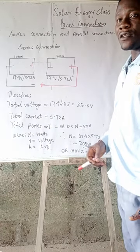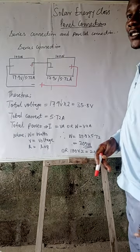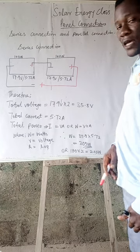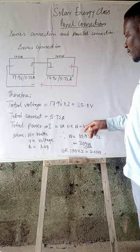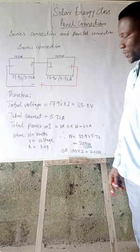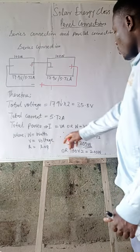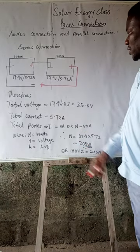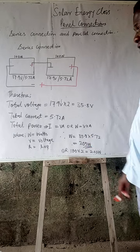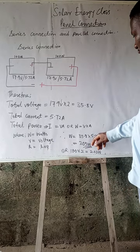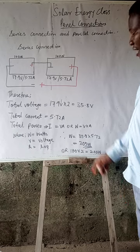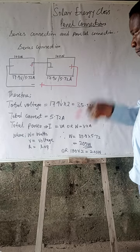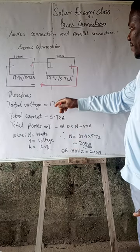The total power here is calculated using Ohm's law. In simpler terms, you use the formula: W equals V times A, where V is the voltage and A is the amperage. When you multiply the voltage by the current to get the power or wattage, it gives you approximately 205 watts — that is supposed to be 204, as an approximation.